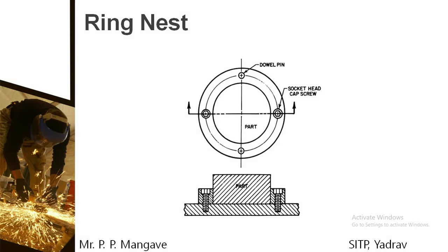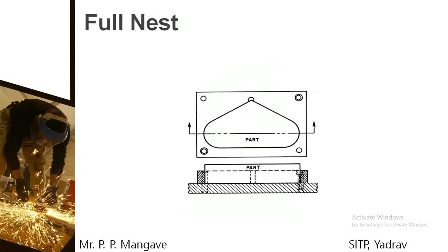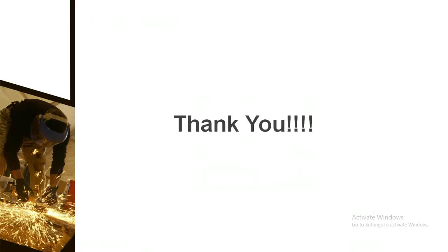The first type is ring nest. As you can clearly see, there is a dowel pin and a socket head or cap screw, and the part is completely placed over it. The internal cavity consists of different holes which are used to locate the pins and completely position the workpiece. The next type is full nest, where each and every corner of the workpiece can be supported using a locating device.